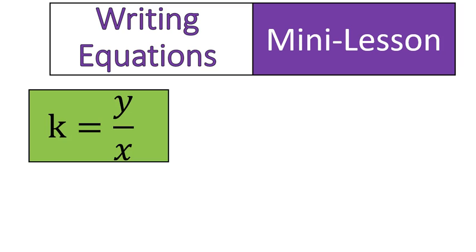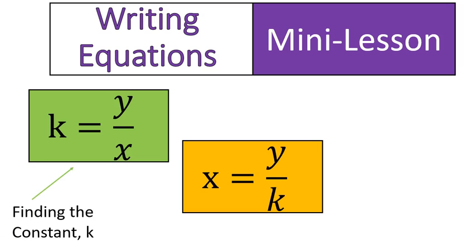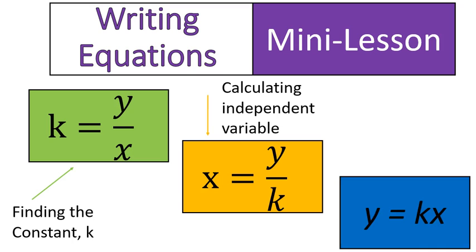There's a constant, k, and if you were writing the equation to find the constant, it would look like this. There's the independent variable, x, and if you were writing an equation to find the independent variable, you would write it like this.